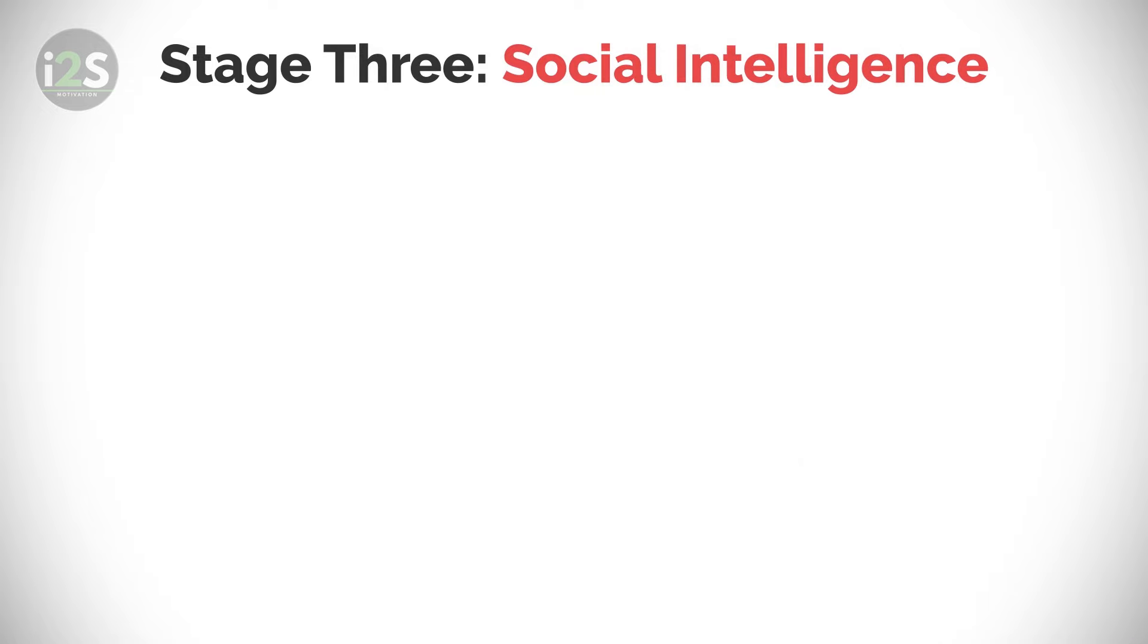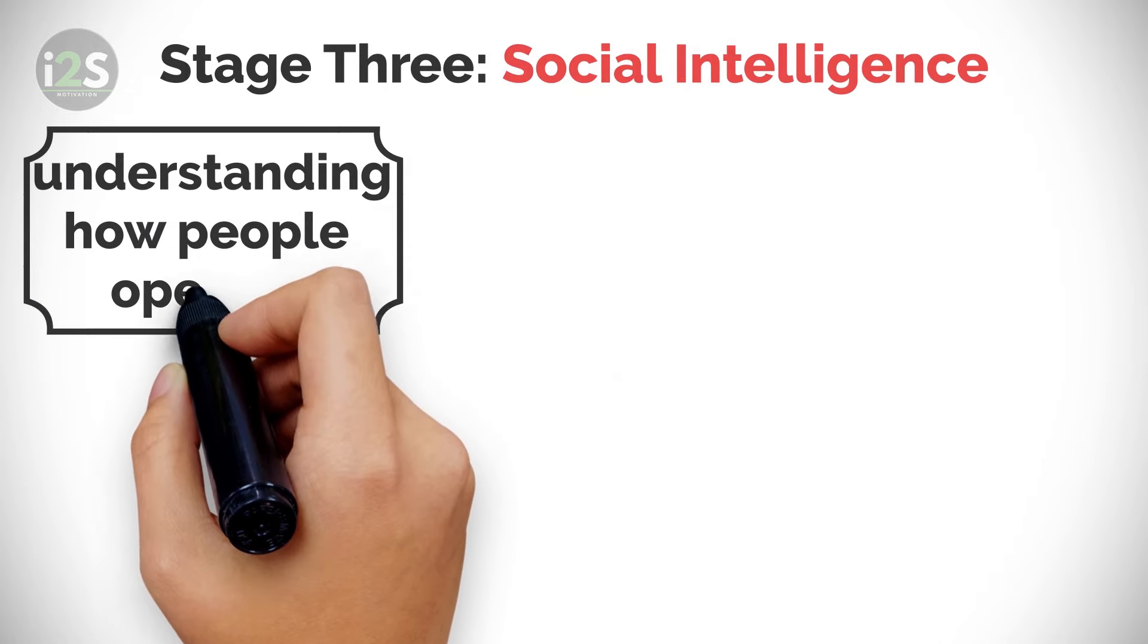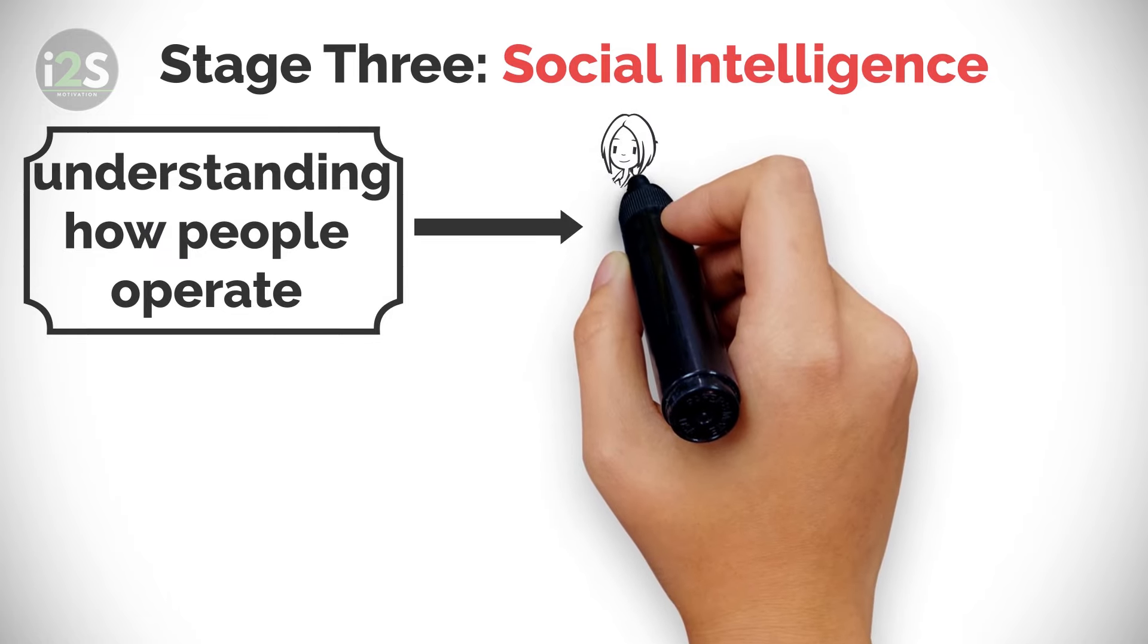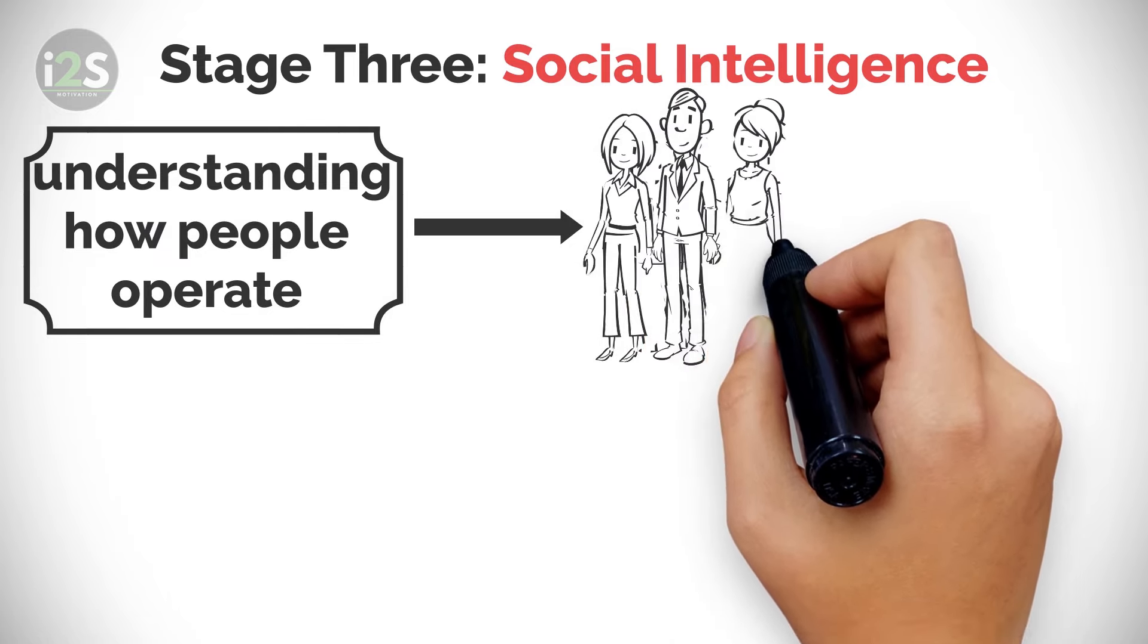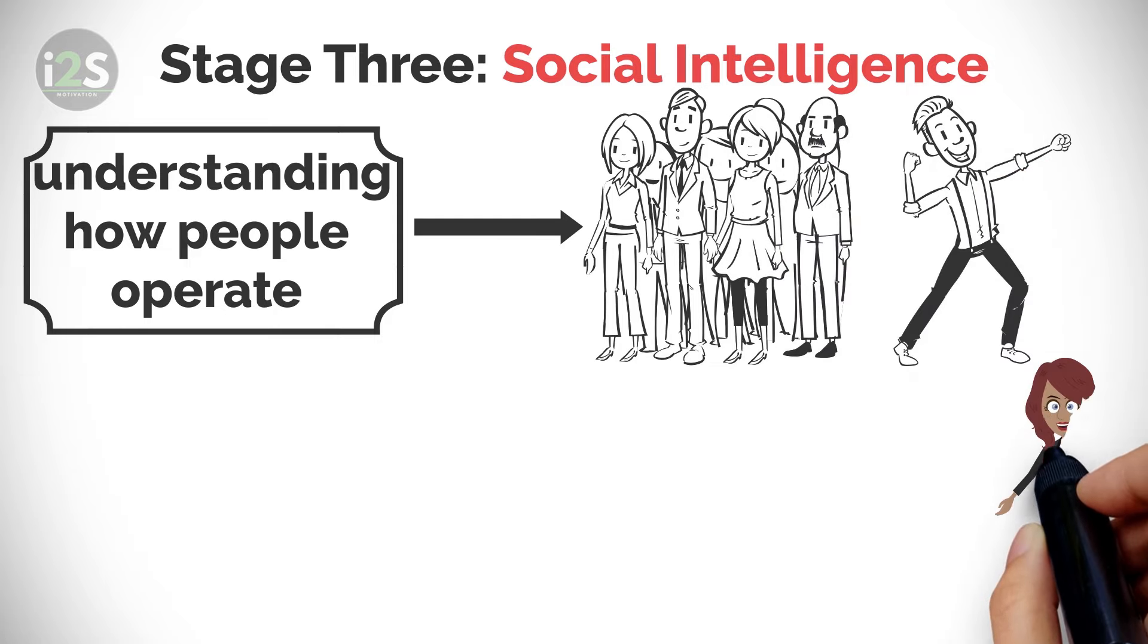Simply put, social intelligence is understanding how people operate. On your journey to mastery, you will work with many types of people. And without understanding the dynamics of human nature, you can't go too far.